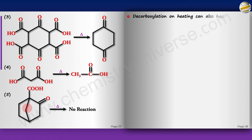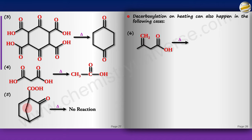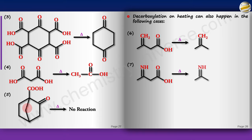A bridgehead compound cannot undergo thermal decarboxylation because the transition state would require a double bond at the bridgehead, which violates Bredt's rule. Decarboxylation on heating can also occur in other special cases besides beta-keto acids, including certain highly conjugated or stabilized carbanion systems.